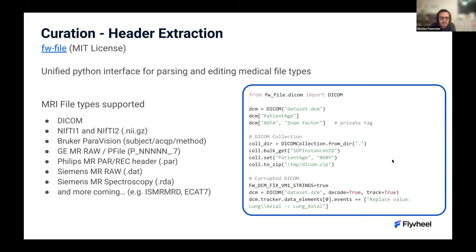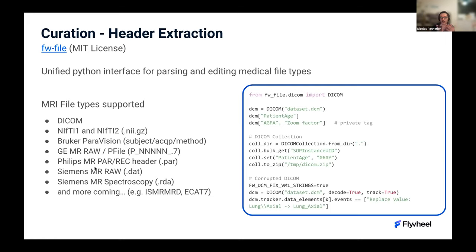We at Flywheel believe there is a lot of value in leveraging raw metadata and giving flexibility in curation. What we're putting together as open-source tools is a unified Python interface for parsing and editing medical file types. Instead of having multiple standards addressing specific file types and modalities, we're working on a unified interface to expose, edit, and parse multiple different file types. For instance, there is a ton of information in DICOM headers, and we've put together a Python package to parse headers conveniently and represent them in the same data structure.